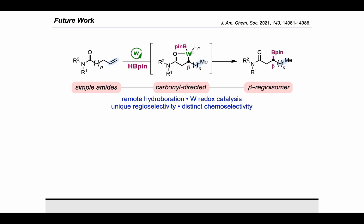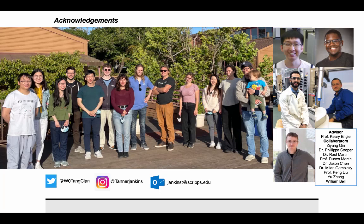If you are interested in this work, you may also want to check out our recent publication where we use low-valent tungsten to control chain-walking for a remote hydroboration reaction using simple amides as directing groups. Thank you to my many amazing coworkers and thank you for listening. I hope you enjoyed this Research Spotlight for Synthesis Workshop.